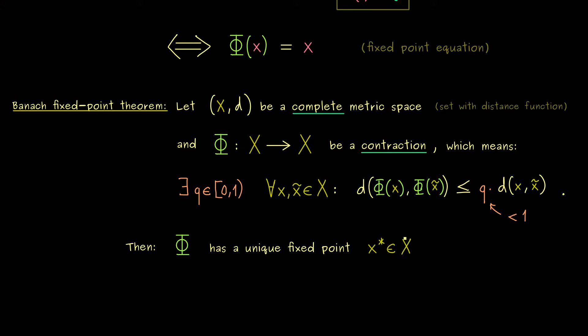Moreover, the Banach fixed point theorem also tells us how we can find this fixed point x*. Namely, we just have to start with any point x₀ from the metric space X. And then we can just do the iteration with the map Φ. This means, if you use the composition with Φ n times, you get a sequence in X. And this sequence is a convergent one with limit x*. In other words, by using this iteration, you can approximate the fixed point.